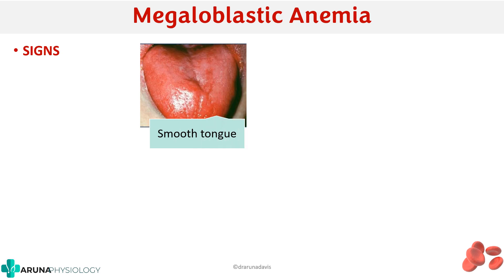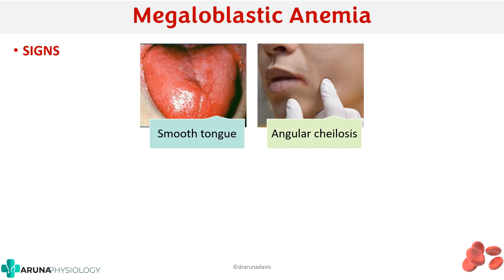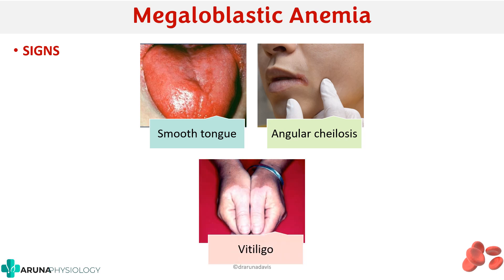What about the signs? On examination, the person will have glossitis — a smooth tongue. They can have angular cheilitis, which is a lesion at the angle of the mouth. They can also have skin pigmentation and vitiligo. These are specific features of megaloblastic anemia.